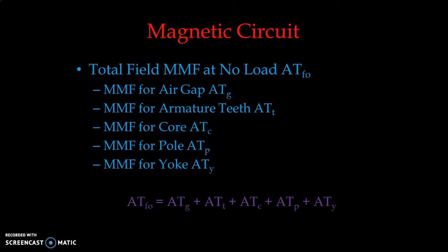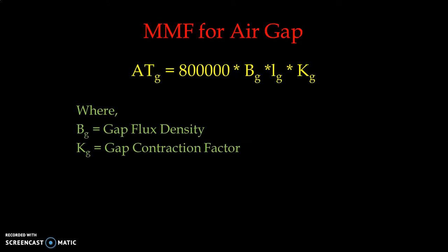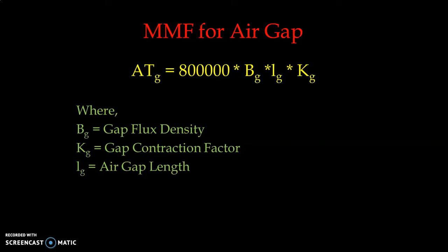We start with the MMF for the air gap, atg. The equation to calculate ampere-turns for the air gap is: atg = 8 × 10⁵ × Bg × lg × Kg, where Bg is the gap flux density, Kg is the gap contraction factor, and lg is the air gap length.